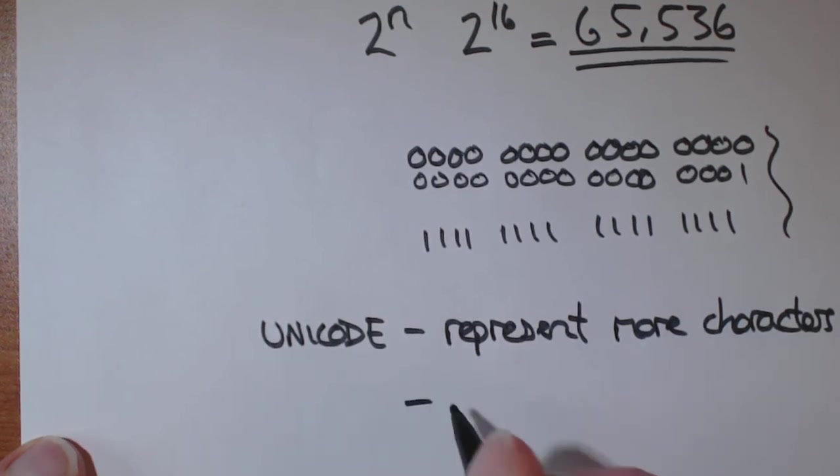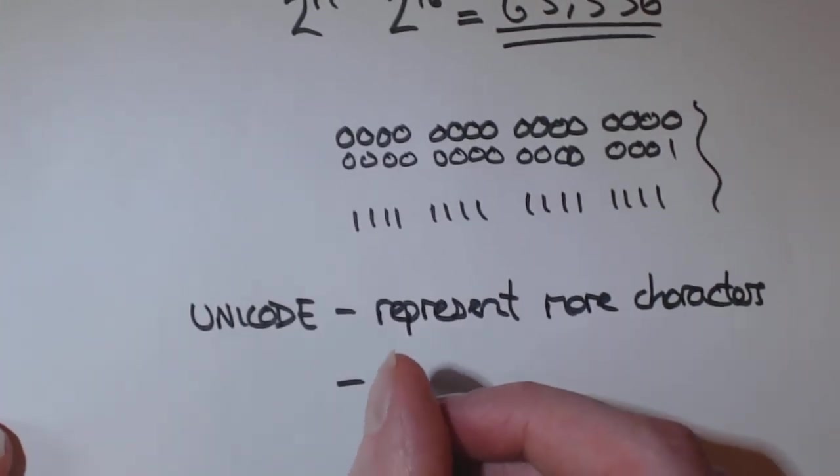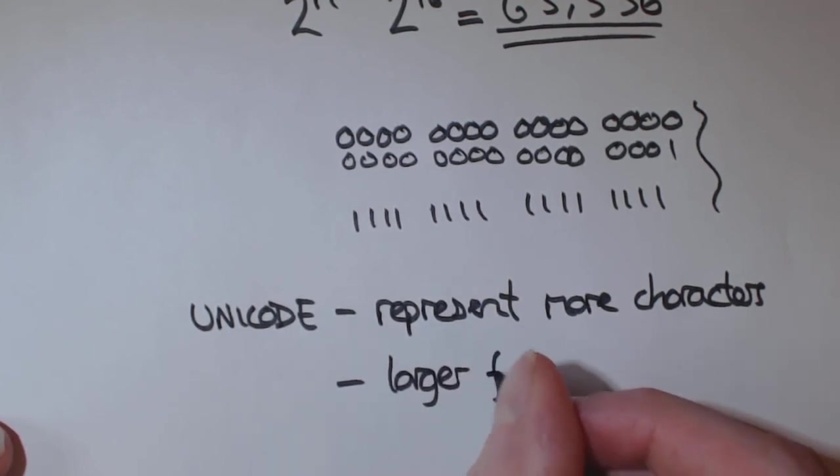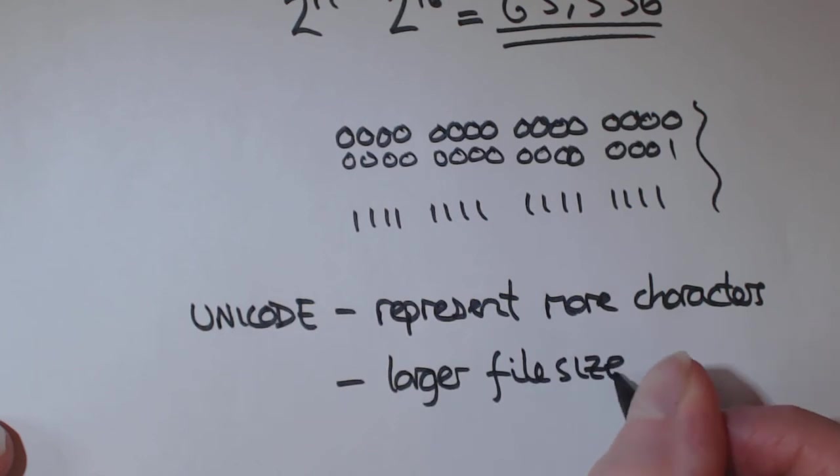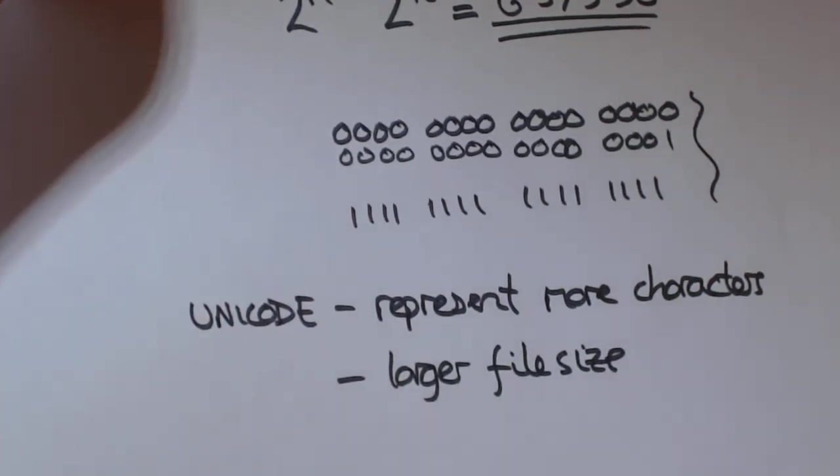However, the disadvantage is larger file size. So, that's really the difference between Unicode and ASCII.